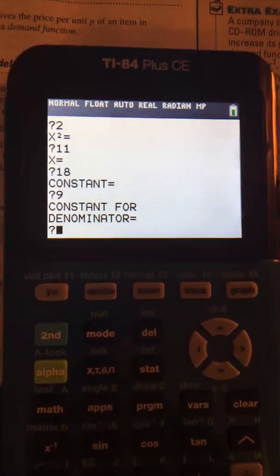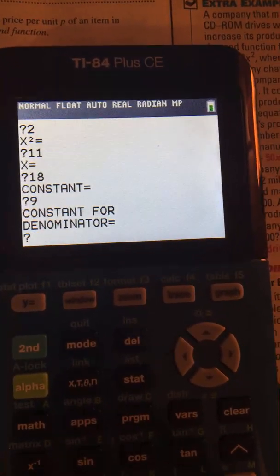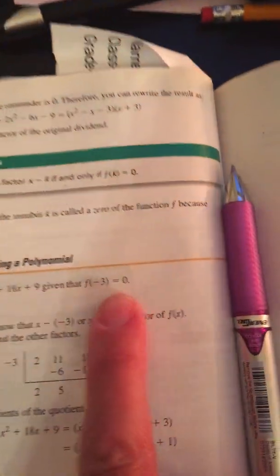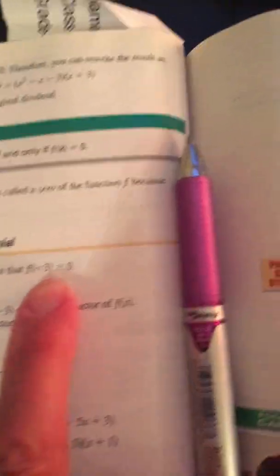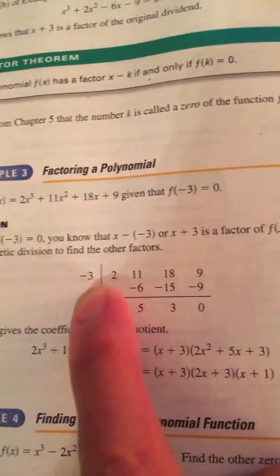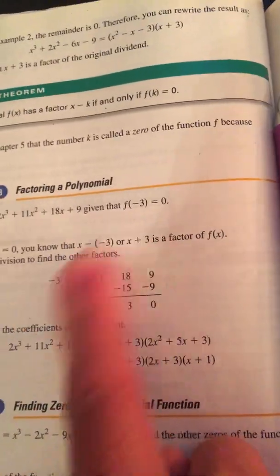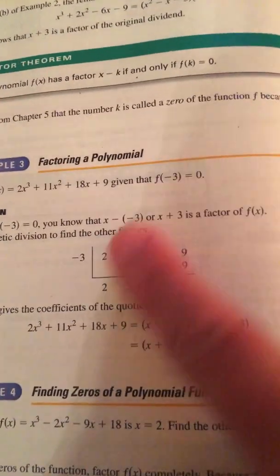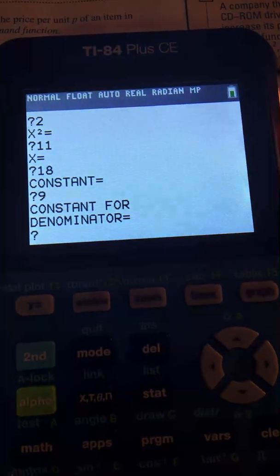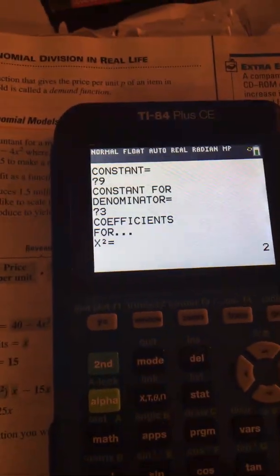Now the constant for the denominator. What the denominator is what's being divided into it. And this is a negative three. But we put the opposite sign of that. And if you are already learning how to do these problems, you'll realize why. But it's the opposite sign that you use with synthetic division. So I put three. Just three, not negative three.